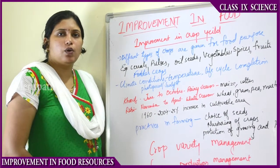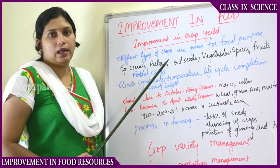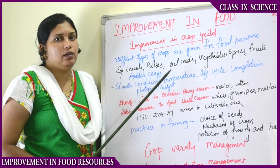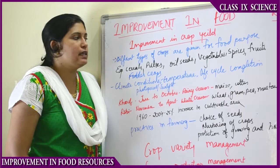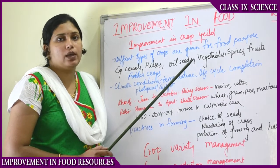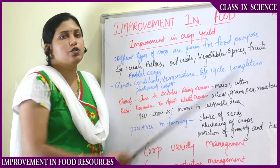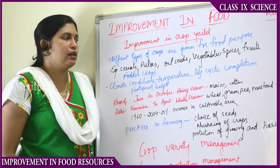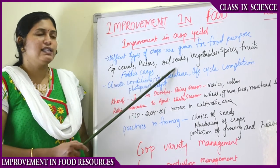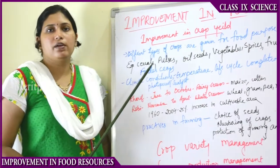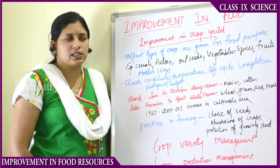In cereals we grow rice and wheat. Pulses include all the dals - Bengal gram dal and all other dals. Oil seeds include sunflower oil, linseed oil, castor oil, and soya bean oil. Vegetables, spices, and fruits provide us vitamins and minerals. Pulses give us proteins, oil seeds give us fats, and cereals give us carbohydrates.